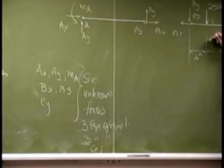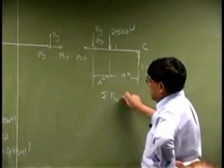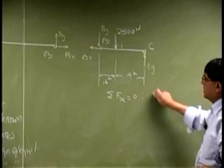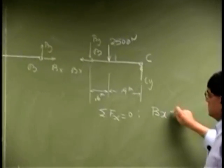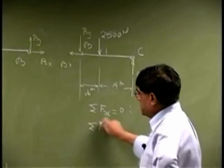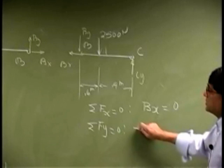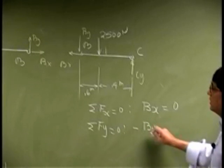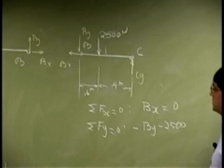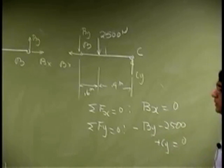So let's start from here. We sum the force in X, this immediately gives you the force BX as zero. Then we sum the force in Y, that gives us negative BY, negative 2500 plus CY and that goes to zero.